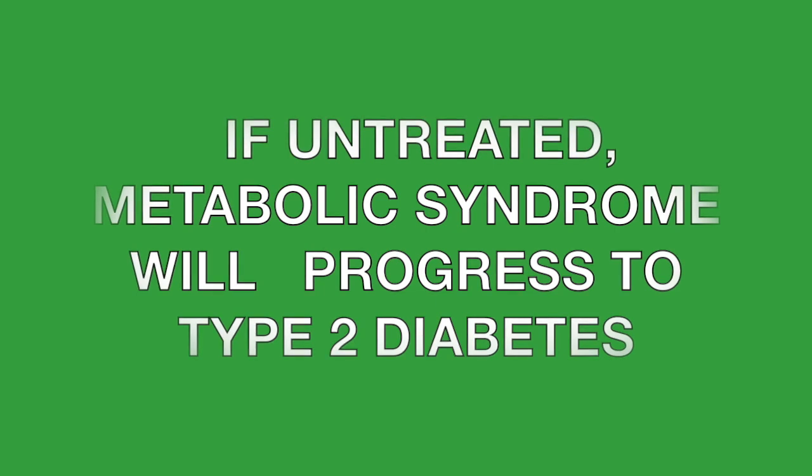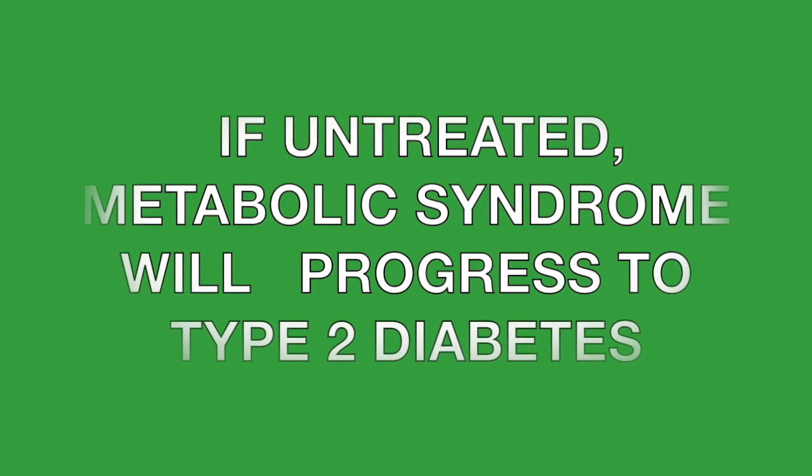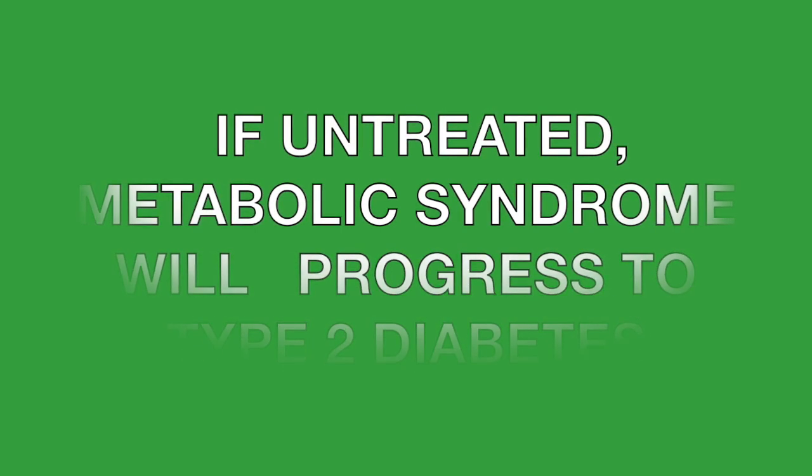If untreated, metabolic syndrome ultimately turns into type 2 diabetes, which we want to prevent, because type 2 diabetes itself greatly increases the risk of other chronic diseases, including cardiovascular disease. It almost feels like a circle — everything is related. Certain criteria lead to metabolic syndrome, which turns into diabetes, and diabetes in turn worsens other chronic conditions, creating a vicious cycle.